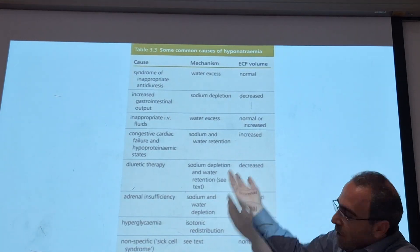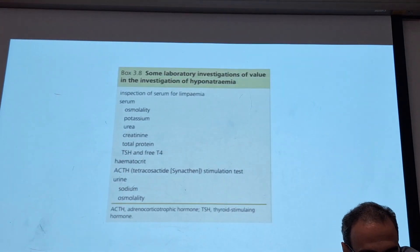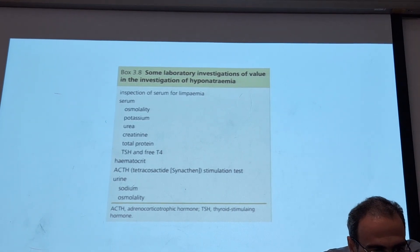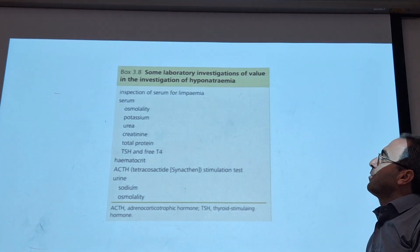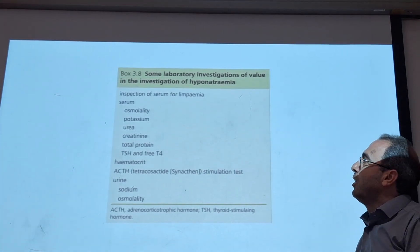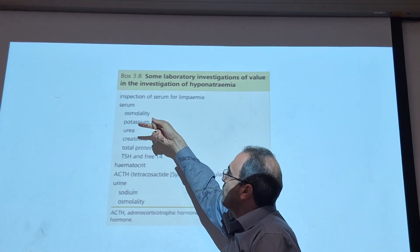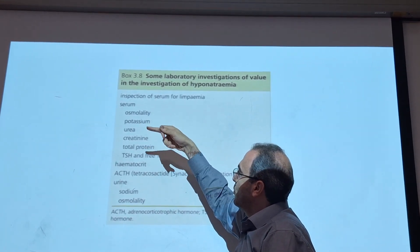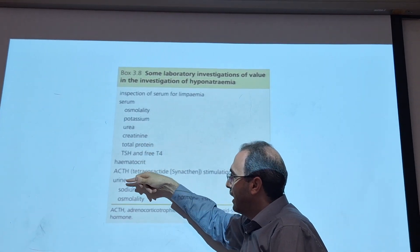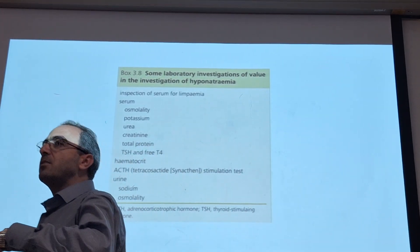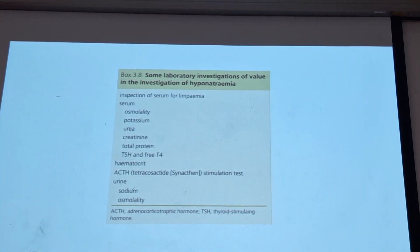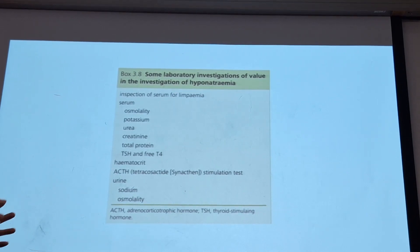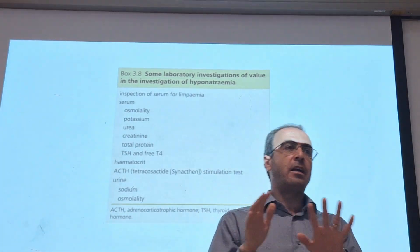For laboratory investigation of hyponatremia, we have to check sodium, osmolality, potassium, urea, creatinine, total protein, TSH, uric acid, and urine sodium and osmolality. Based on the information from all of them, we can decide the reason for hyponatremia and how to manage it.